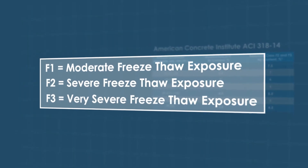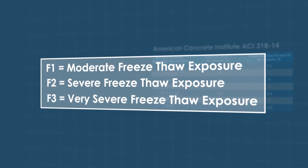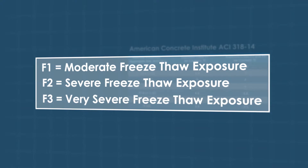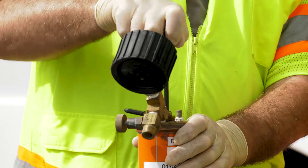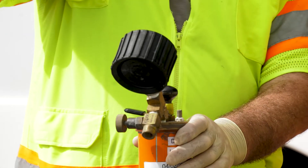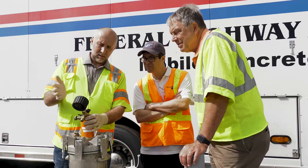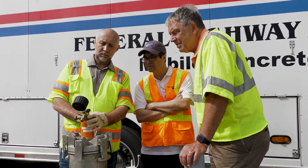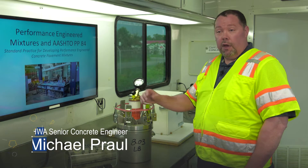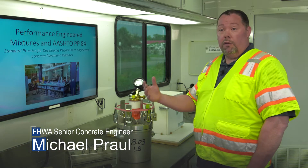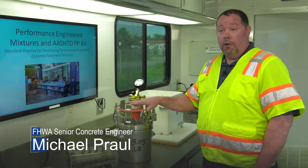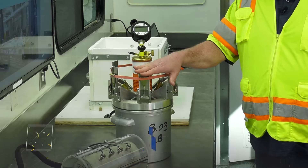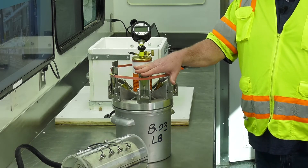Researchers now recognize that the spacing or distribution of the air bubbles is also crucial for freeze-thaw performance. The air void system of the fresh concrete can be characterized using the super air meter test, which gives us an indication of the actual air void system in the concrete — not just the total amount of air — which is a much better indicator of the future durability of the concrete.